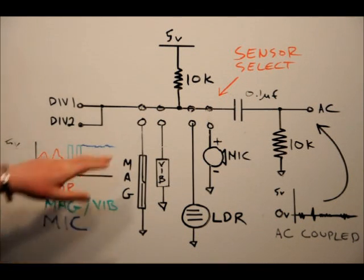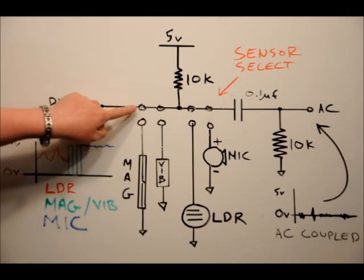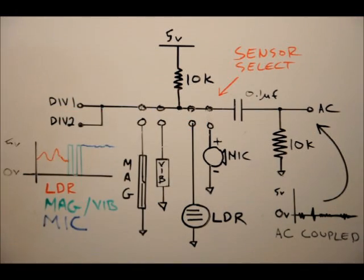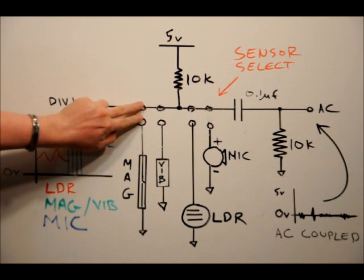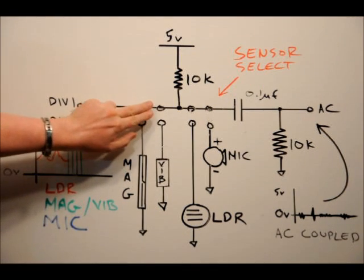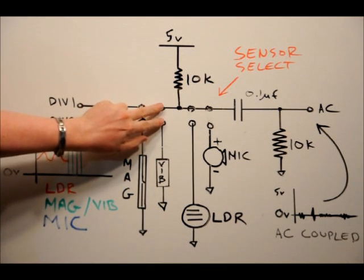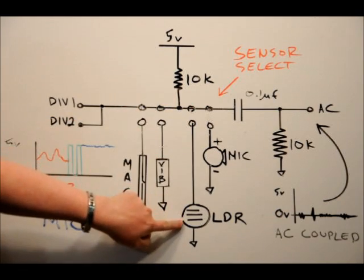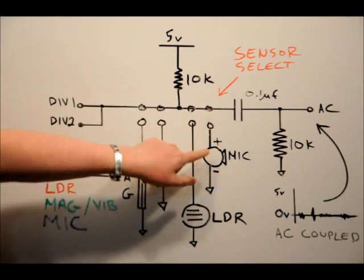This is our sensor select pin block. If I connect the two-pin jumper to these two pins, I'm selecting the magnetic read switch. If I place the two-pin header here, I select the vibration sensor. If I place it here, the LDR. If I place it here, I select the microphone. All of these sensors have the secondary side connected to ground. The only component that has a polarity is the microphone.